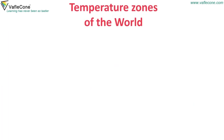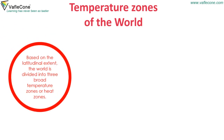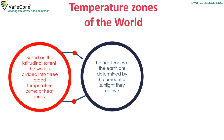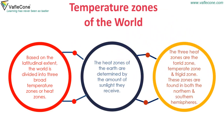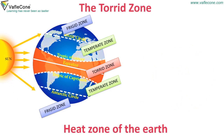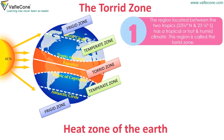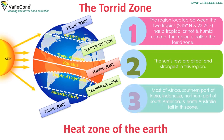Based on the latitudinal extent, the world is divided into three broad temperature zones or heat zones, determined by the amount of sunlight they receive. The three heat zones are the torrid zone, temperate zone, and frigid zone, found in both the northern and southern hemispheres. The torrid zone lies between the two tropics — 23.5 degrees north and 23.5 degrees south — and has a hot and humid climate with the sun's rays being direct and strongest. Most of Africa, the southern part of India, Indonesia, northern South America, and northern Australia fall in this zone.